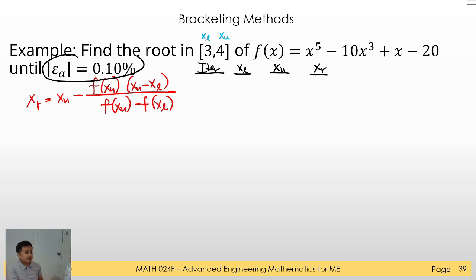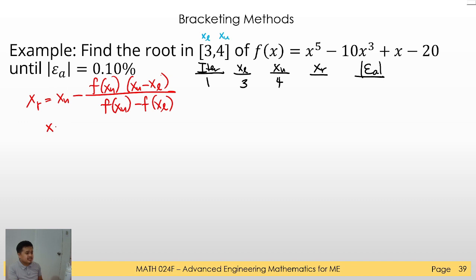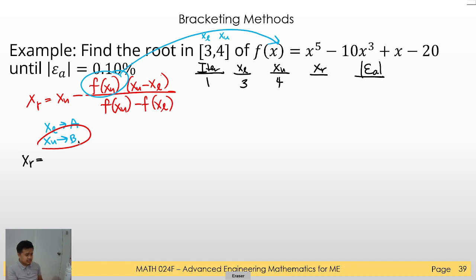For the first iteration, we have the given initial condition or initial approximation of 3 and 4. To find XR, let's utilize our calculators and change the variables. Let's make XL into A and XU into B. So we know that F of X equals the given function, so XR in terms of A and B will be: B minus F(XU) times (XU minus XL) divided by (F(XU) minus F(XL)).